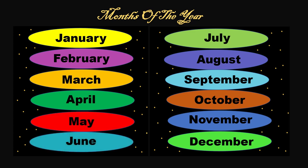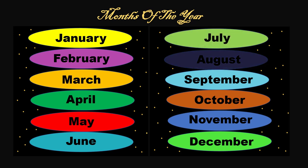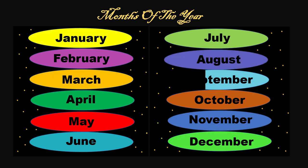The sixth month is June — J-U-N-E — June. The seventh month is July — J-U-L-Y — July. The eighth month is August — A-U-G-U-S-T — August. The ninth month is September — S-E-P-T-E-M-B-E-R — September.